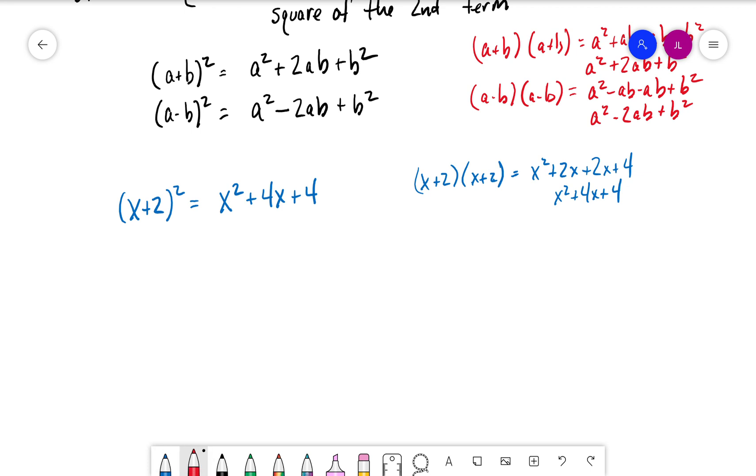Let's look at one more example. We have (x² - 7y)². The square of the first term, x² squared, would be x⁴.